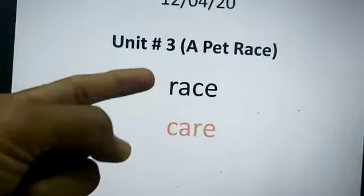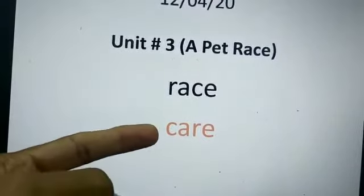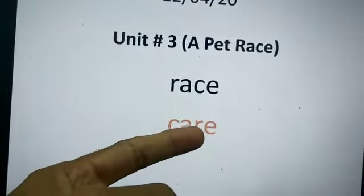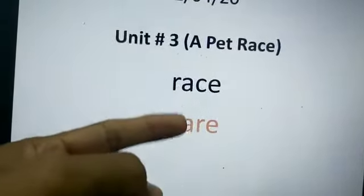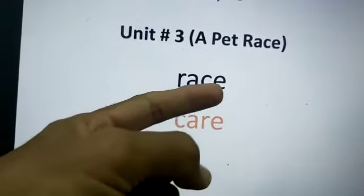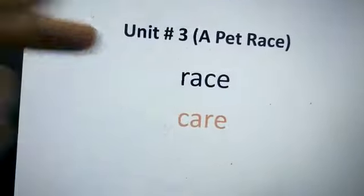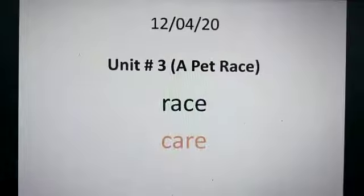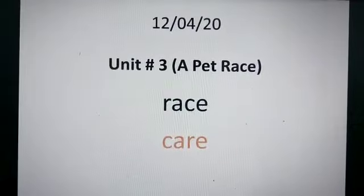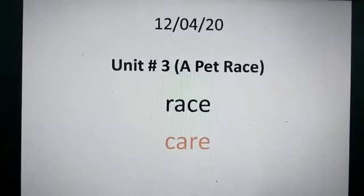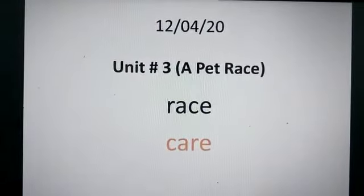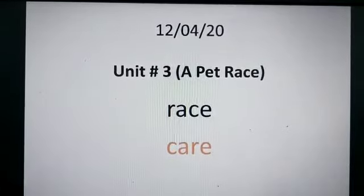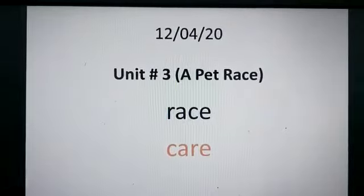You can clearly see the same letters are used. R, A, C, E — we change their sequence. When we make another word by rearranging the letters, this is called anagram. So let's move towards another example.